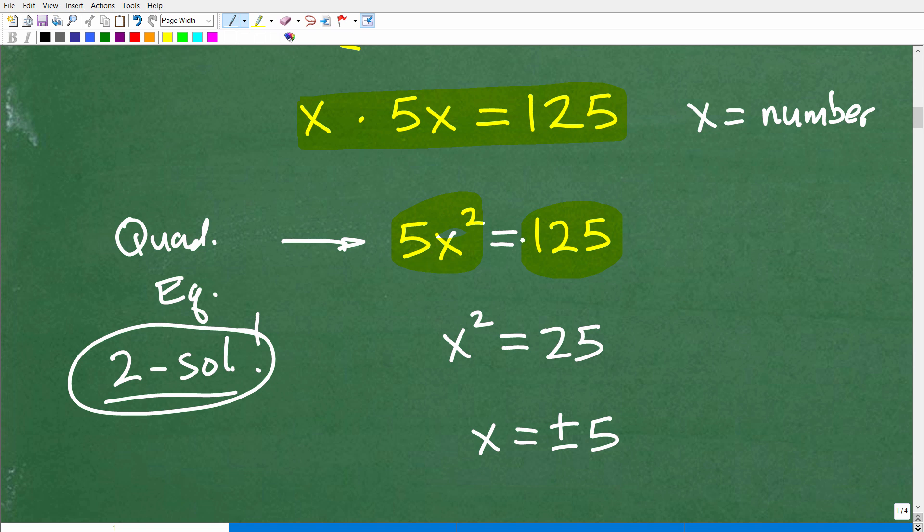So how do I solve this particular quadratic equation? Well, the easiest thing to do is to isolate that X squared. I'm going to go ahead and divide both sides of the equation by five. So 125 divided by five and five divided by five over here gives me X squared is equal to 25.